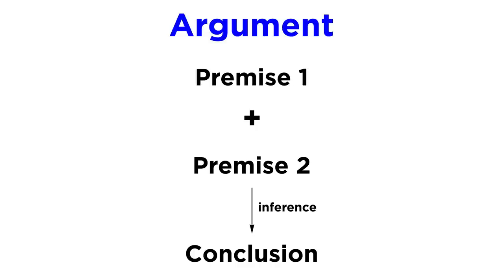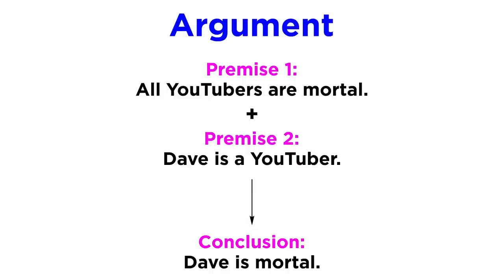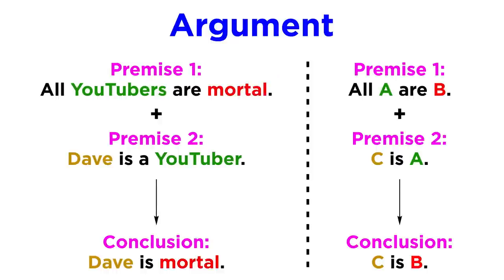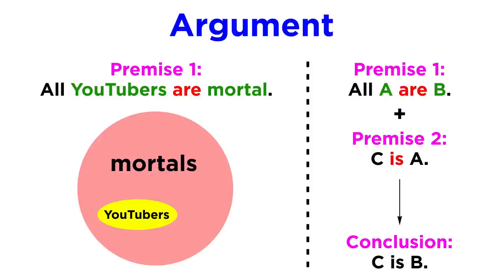As we recall, an argument is composed of premises which result in a conclusion. The simple example we looked at earlier is a very straightforward argument, and if we change the nouns into letters, we can begin to see how this simple argument can be equivalent to a formula, with every word having a function. 'All' denotes every member of a category, in this case YouTubers. 'Are' and 'is' indicate a connection between the first category and the second, however not necessarily the opposite — for example, not all mortals are YouTubers.